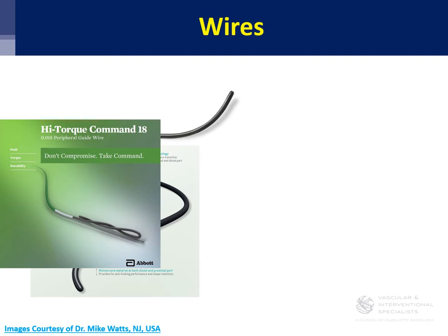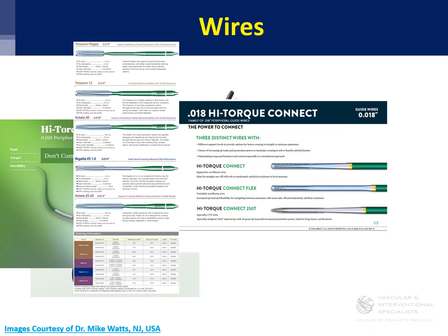For tight occlusions, I will use Astato weighted wires. These are heavy weighted wires at the tip that come in 20 gram and 30 gram, and they can sometimes bore through occlusions. I actually use them for venous occlusions as well — they're quite effective. Here are the weighted wires shown: the Treasure 12, which is a 12-gram wire, all the way to the Astato 30, which is that 30-gram wire.